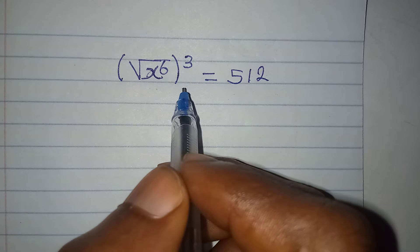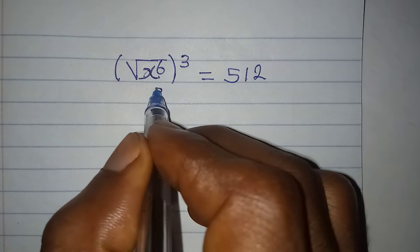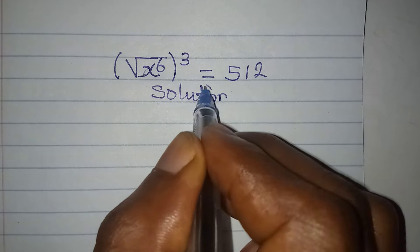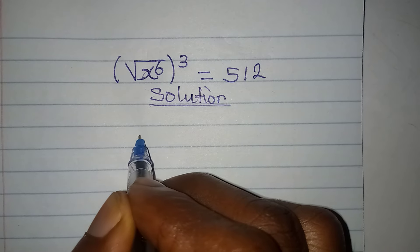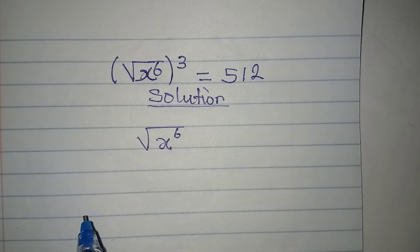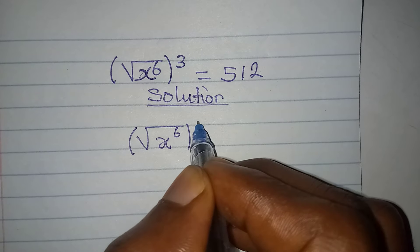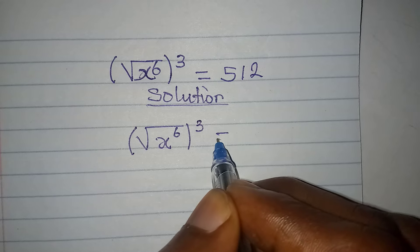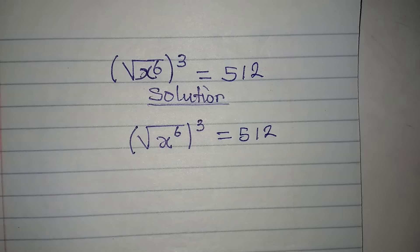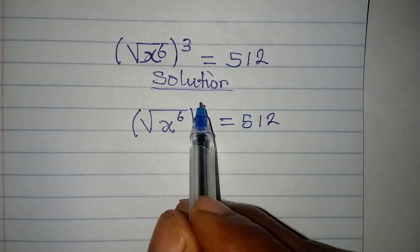Hello everyone, let's solve this very quickly. Don't be scared, this is not that hard. We have square root of x to the power of 6, and the whole of this raised to the power of 3 equals 512. What will be the first step you're going to take? We're trying to remove this power of 3.